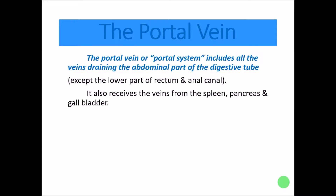Along with the digestive system, the portal system also receives venous blood from the spleen, pancreas, and gallbladder.